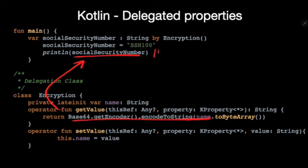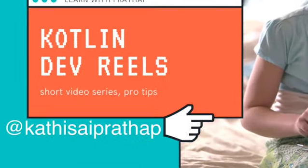So here we will get some encrypted output like x, y, z, 1, 2, 3, 4 instead of the original SSN value like 1, 0, 0. This is a simple way that we can delegate a string and achieve common logic like encoding a string by using delegated properties. Thank you for watching. For more videos, like and subscribe the channel, and follow me on Twitter as well.